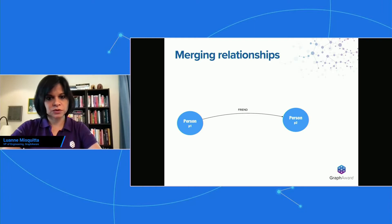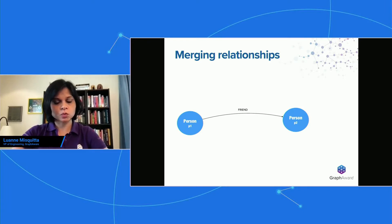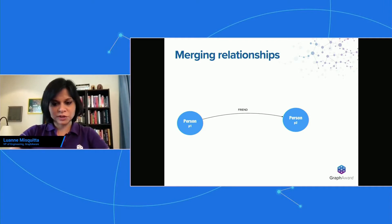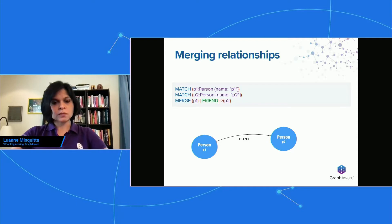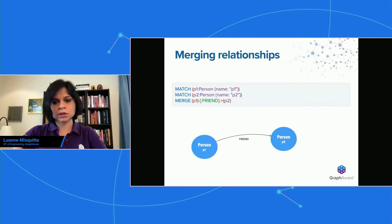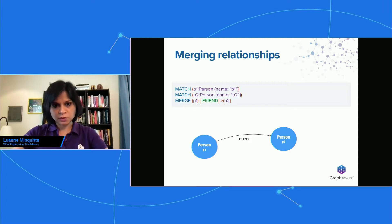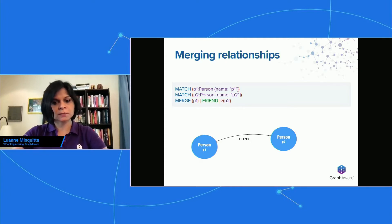Nodes are pretty straightforward. Now let's talk about relationships. We have two people in the graph and we want to ensure that they're only friends once — just one friend relation between them. No matter how many times P1 or P2 declare that they're friends, we just want one friend relation. We look up the nodes on either end of the relation — we match person one, match person two, and then we merge the relationship in. Cypher first tries to match the pattern. It has P1, it has P2, it looks for an outgoing friend relationship from P1 to P2. It doesn't find it, so it creates it. You can run this merge statement as many times as you like and you will still have exactly two nodes with a friend relationship between them.